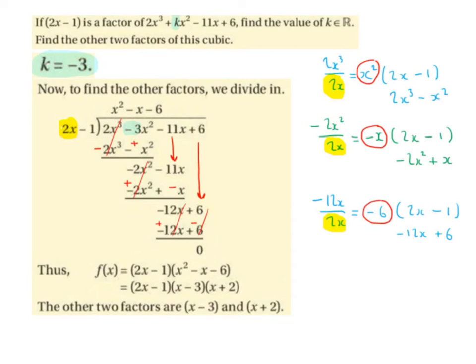So the factors of 2x cubed minus 3x squared minus 11x plus 6 are 2x minus 1 multiplied by x squared minus x minus 6. So f of x equals 2x minus 1 multiplied by x squared minus x minus 6. We can factorize x squared minus x minus 6 to give us x minus 3 times x plus 2. Therefore the other two factors are x minus 3 and x plus 2.